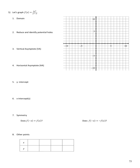Now for an example. The domain is any x value that will not make the denominator 0. Setting x² - 9 = 0 gives x = ±3, which are excluded from the domain. So the domain is (-∞, -3) ∪ (-3, 3) ∪ (3, ∞).